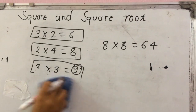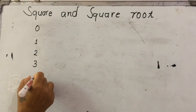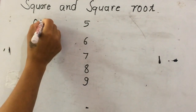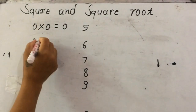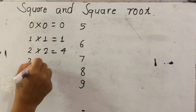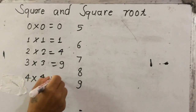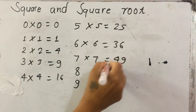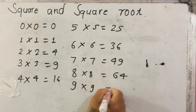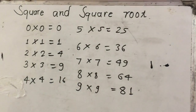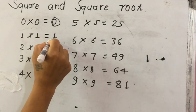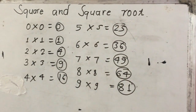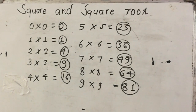Let's look at more examples using numbers 0 through 9. Multiplying each by itself: 0 times 0 is 0, 1 times 1 is 1, 2 times 2 is 4, 3 times 3 is 9, 4 times 4 is 16, 5 times 5 is 25, 6 times 6 is 36, 7 times 7 is 49, 8 times 8 is 64, and 9 times 9 is 81. So 0, 1, 4, 9, 16, 25, 36, 49, 64, and 81 are all square numbers.